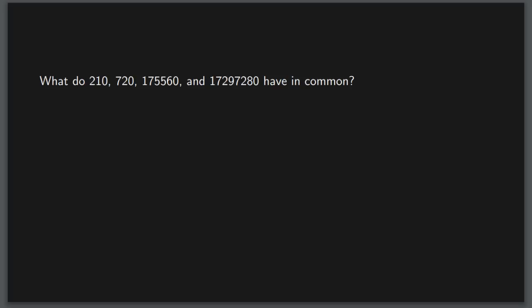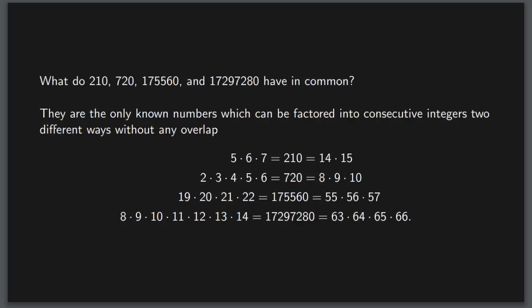What do the numbers 210, 720, 175,560, and 17,297,280 all have in common? Now if you answered that they all end in zero, you would be correct. But more importantly, they are the only known numbers that can be factored into consecutive integers without any overlap.